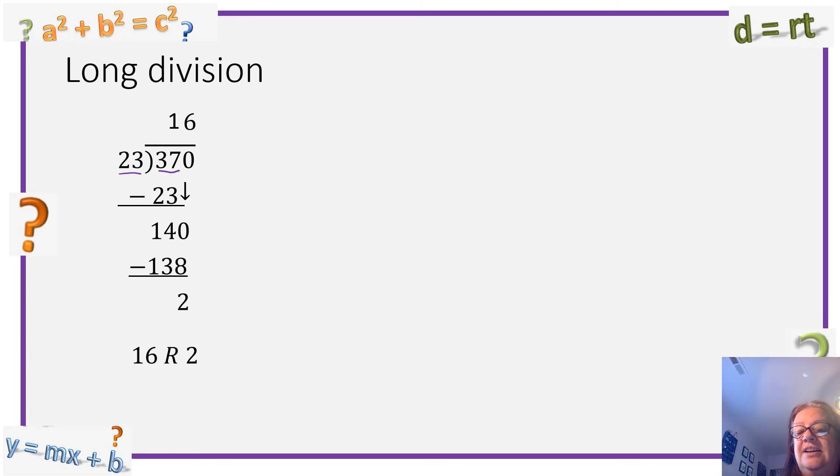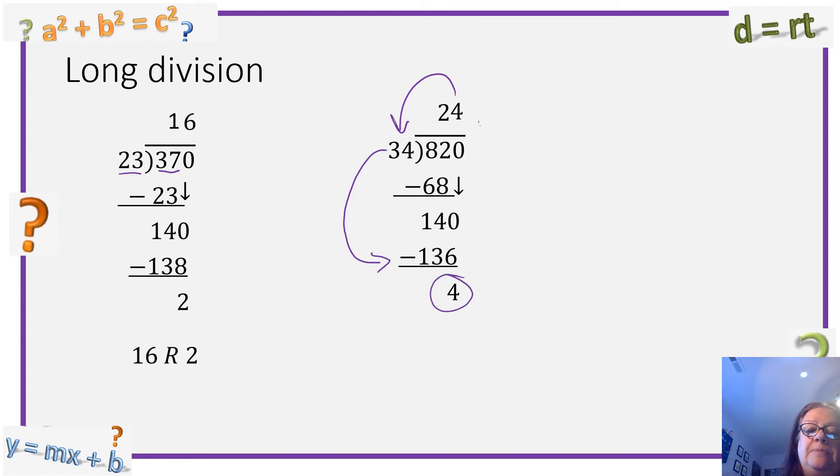We're going to do one more just for practice. 820 divided by 34. 34 goes into 82 twice. You get 68. Subtract. It's 140. Bring down the zero. 34 goes into 140, 4 times. 4 times 34 is 136. Subtract. We get a 4. That's my remainder. Now my answer is 24 remainder 4. Hopefully you've remembered long division.